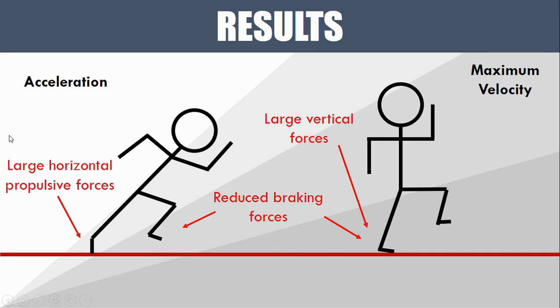The first thing was that during the acceleration phase, the athletes who were faster had larger horizontal propulsive forces, which makes sense because they're able to push into the ground harder, propelling themselves further forward.